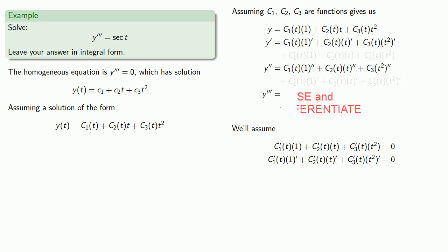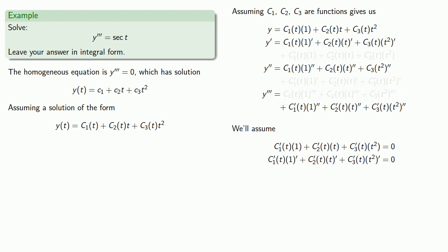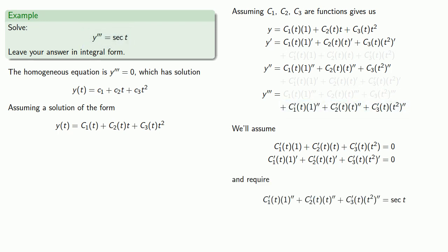We do need that third derivative, so we'll differentiate again. This time things are going to be a little bit different — we want this third derivative to equal secant of t. Notice the third derivative of 1, the third derivative of t, and the third derivative of t squared are all going to be zero. So these terms vanish, and that leaves us just the derivatives of c1, c2, and c3. In order to solve our differential equation, we require that this expression in the derivatives of c1, c2, and c3 must be equal to secant t. And so this gives us our system of equations.